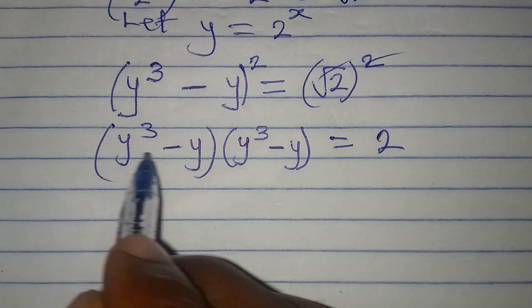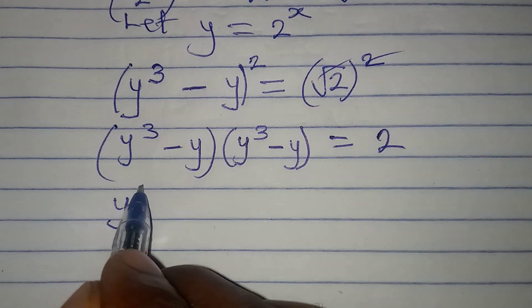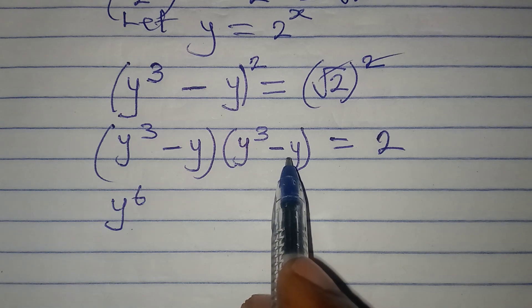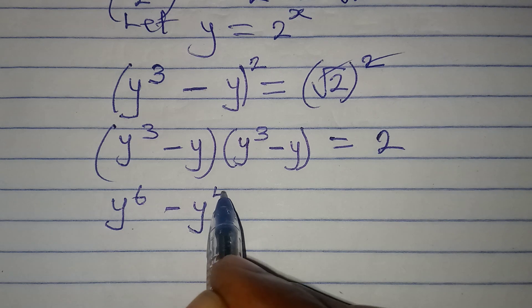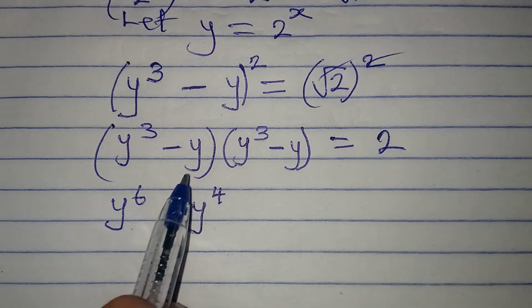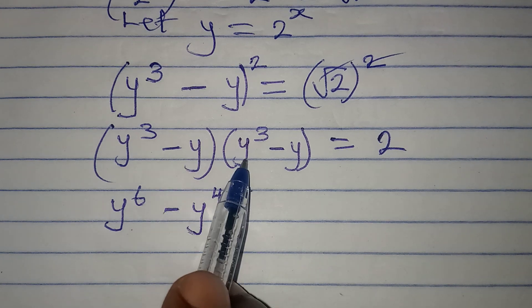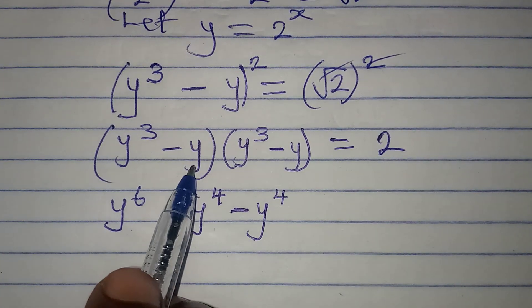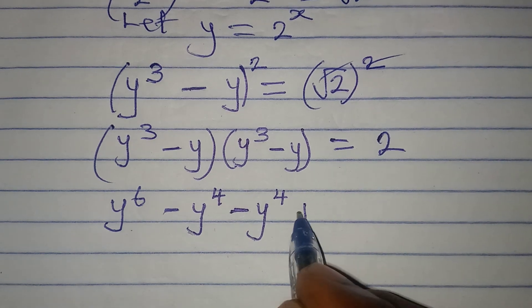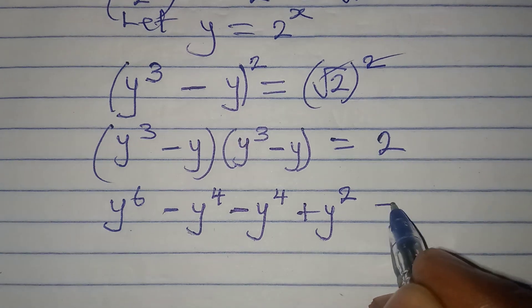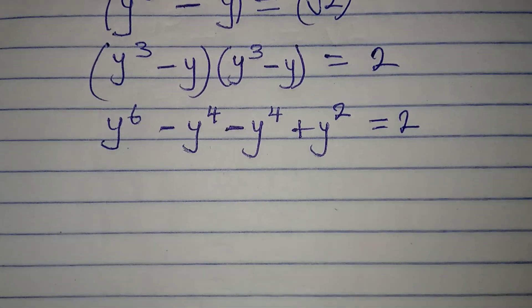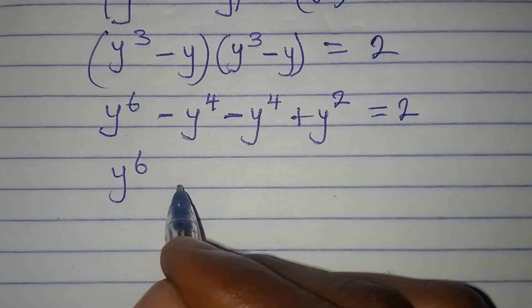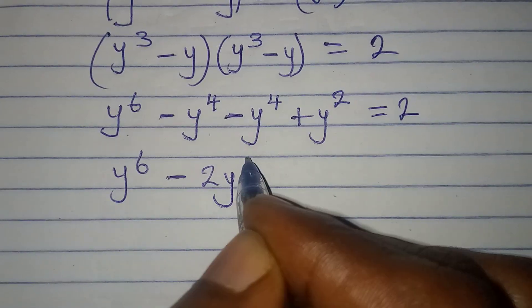y to the power of 3 times y to the power of 3 gives us y to the power of 6 — remember you add the powers. Then y to the power of 3 times negative y gives me negative y to the power of 4. Coming back: negative y times y to the power of 3 gives me negative y to the power of 4. Then minus y times minus y gives plus y squared, and this is equal to 2. So I have y to the power of 6, minus y to the power of 4 minus y to the power of 4, which gives minus 2y to the power of 4.